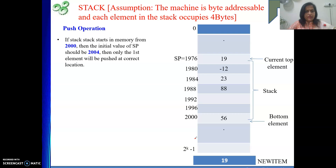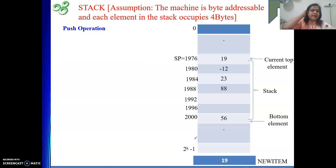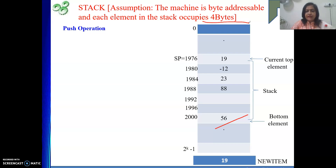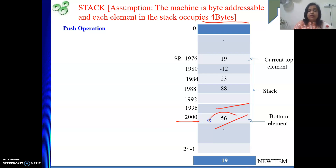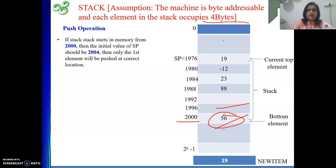One more point I would like to highlight for the push operation. Suppose it is given that your stack starts in memory from location 2000 — that means at location 2000, you can insert one element. To start with location 2000, initially the SP value has to be 2004, due to the assumption taken. Why? Because before inserting, we will decrement and then we will insert. So if you keep the initial value of SP as 2000, then the new element will be inserted at 1996 and this location will remain unused. So we initialize SP with 2004 — first it will be decremented by 4, and then the new element will be inserted at 2000.